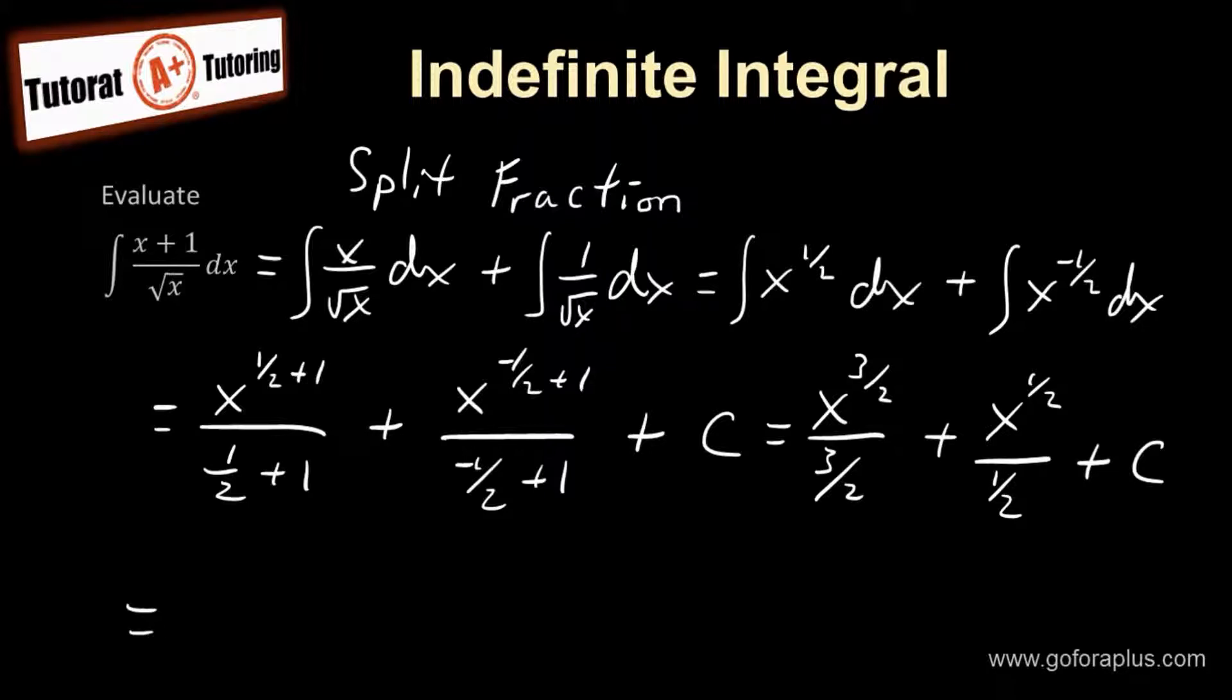Further simplification because we cannot leave fraction over fraction. So we have 2x to the 3/2 over 3 plus 2x to the 1/2 plus C.